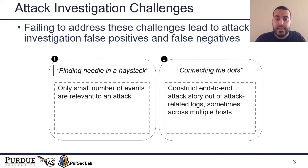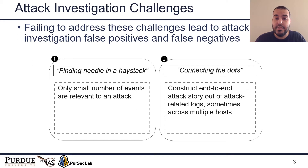The attack investigation task has two main challenges. The first challenge is that attack investigation is a needle in a haystack problem, meaning most of the system events in audit logs are benign, non-attack-related events, and our task is to uncover the minority small number of attack-related events. The second challenge is connecting the dots to uncover the end-to-end attack story — identifying the relations between these few scattered malicious events to construct a concise meaningful attack story.